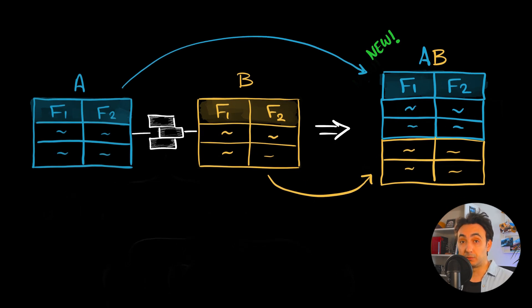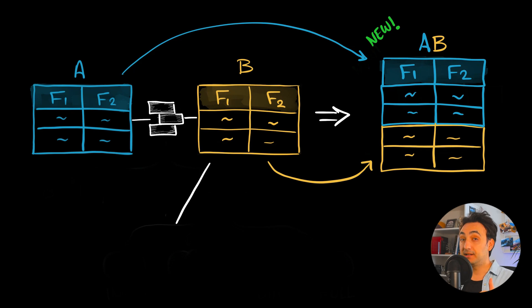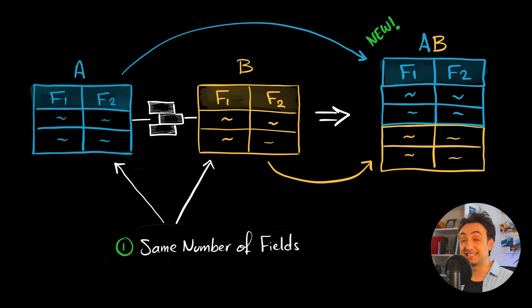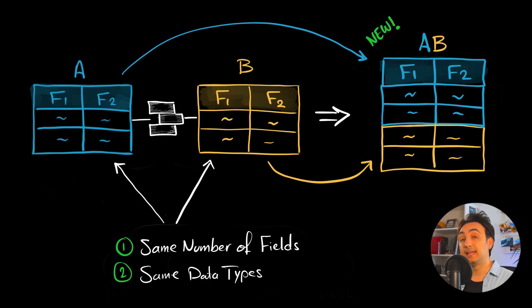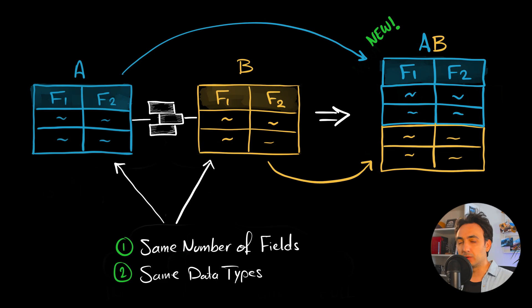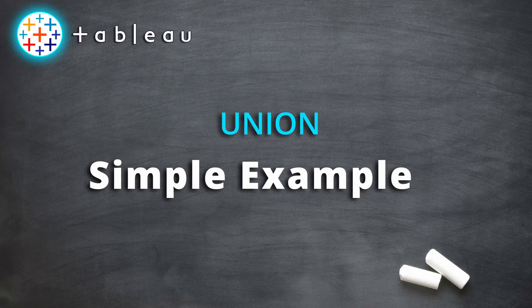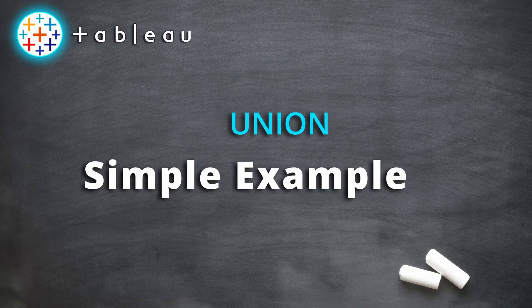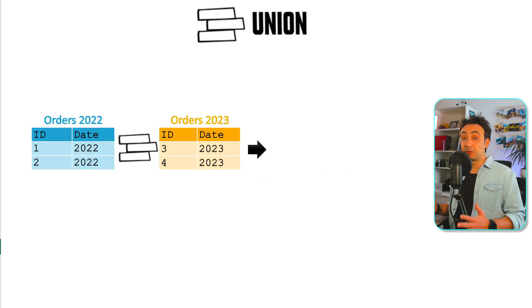To do union correctly we have two requirements: first, both tables should have exactly the same number of fields, and second, the fields should have exactly the same data types. We don't need a key between those two tables — it's not like a join.